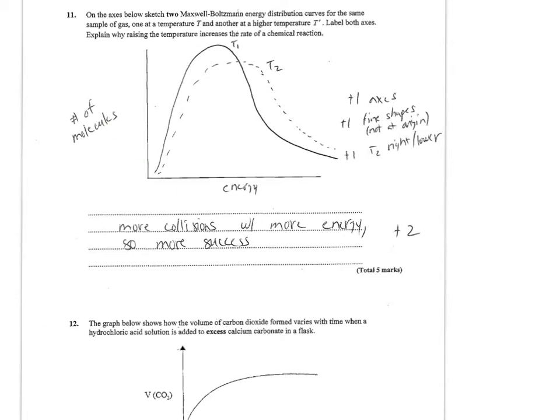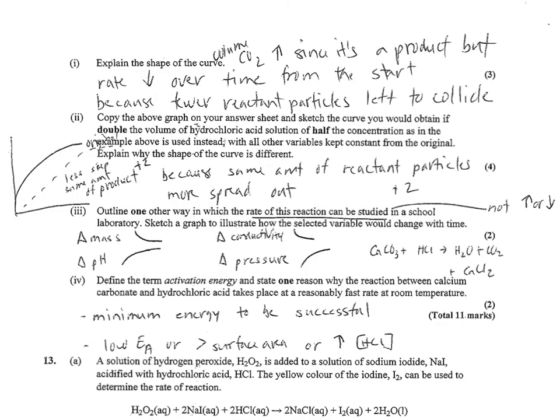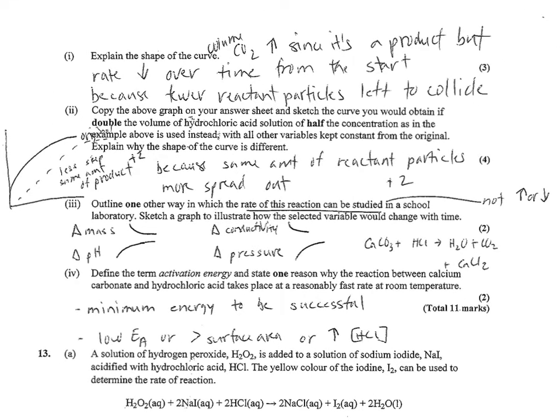Number 12, they gave you a curve to start out, pretty standard curve with CO2. On the next page, explain the shape of the curve. This was a three-mark question. What they really want you to know about that exponential curve is that your initial rate of reaction is your fastest. The slope is positive, so it's a product, but the rate immediately starts decreasing over time because there are fewer reactant particles left to collide.